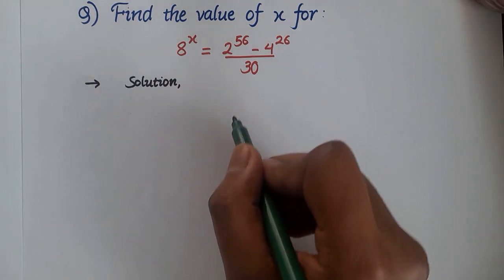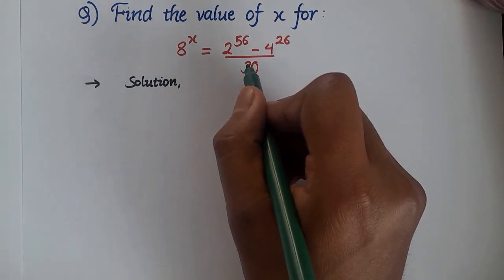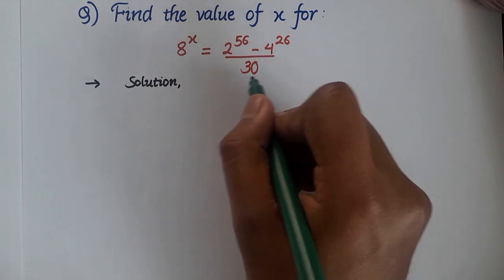How to solve for the value of x that satisfies the given equation 8^x = (2^56 - 4^26)/30.